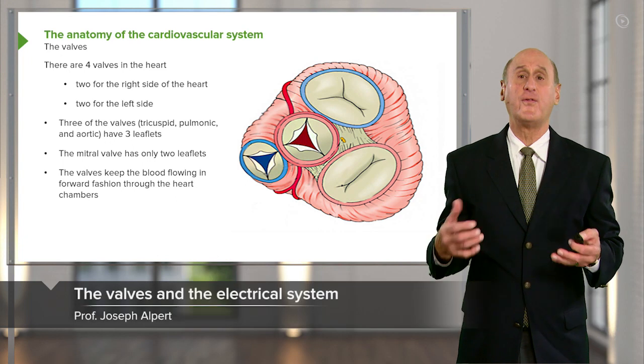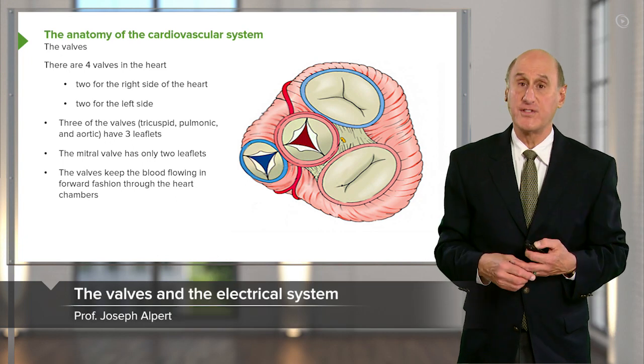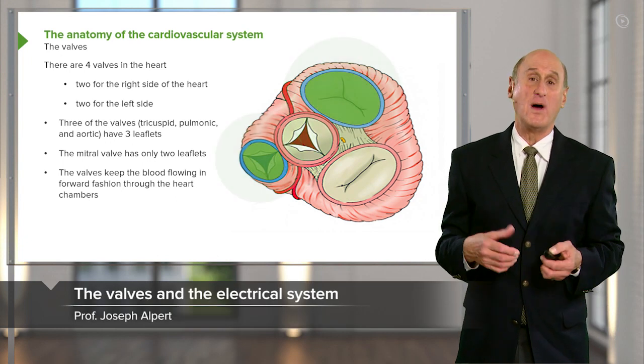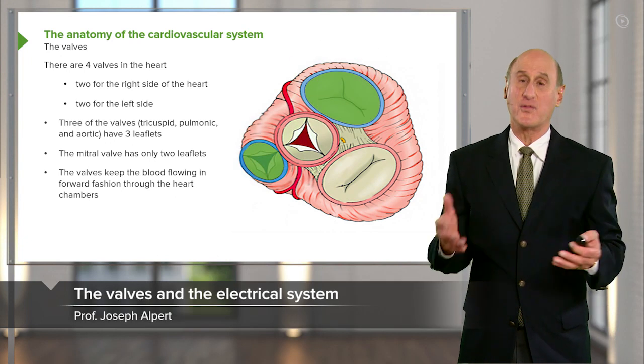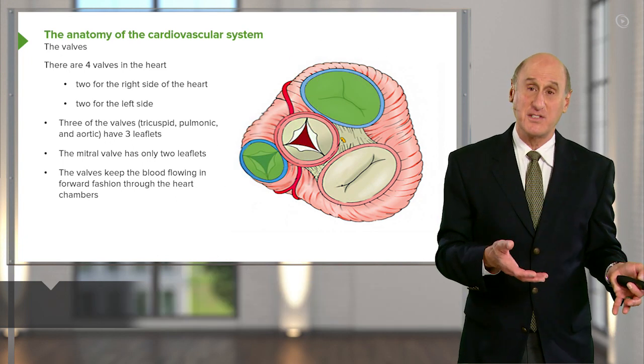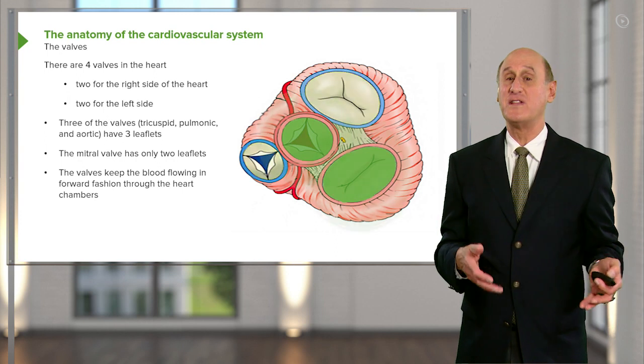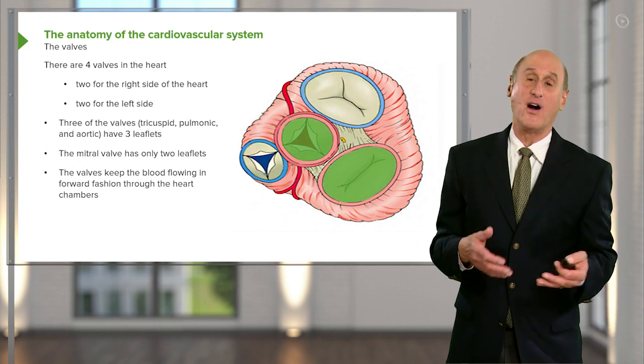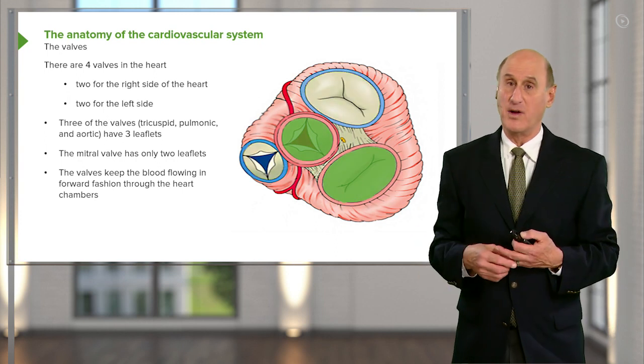Here are the four heart valves. The ones in blue are the right-sided ones, and the ones in red are the left-sided ones.